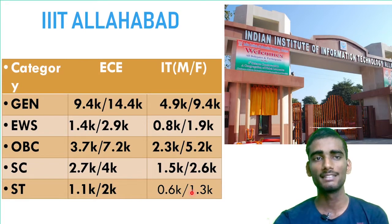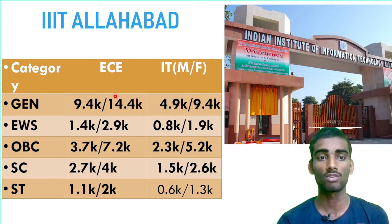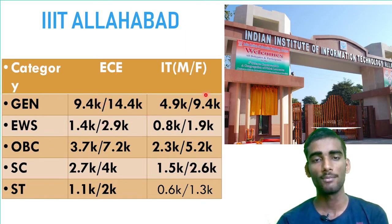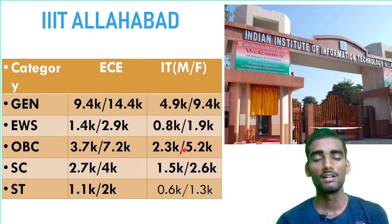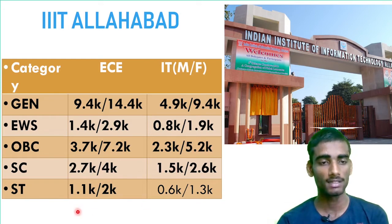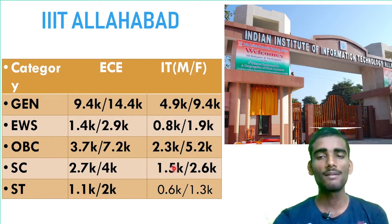Next is IIIT Allahabad — a marvelous and important college in Uttar Pradesh under JOSAA counseling with tough competition. For General: CSC within 9.4k, EC 14.4k, IT 4.9k–9.4k. EWS: EC within 2.9k, IT 0.8k–1.9k. OBC: CSC 1.2k–3.7k, IT 2.3k–5.2k. SC: CSC 2.7k–4.5k. ST candidates: CSC 1.1k, IT 0.6k.